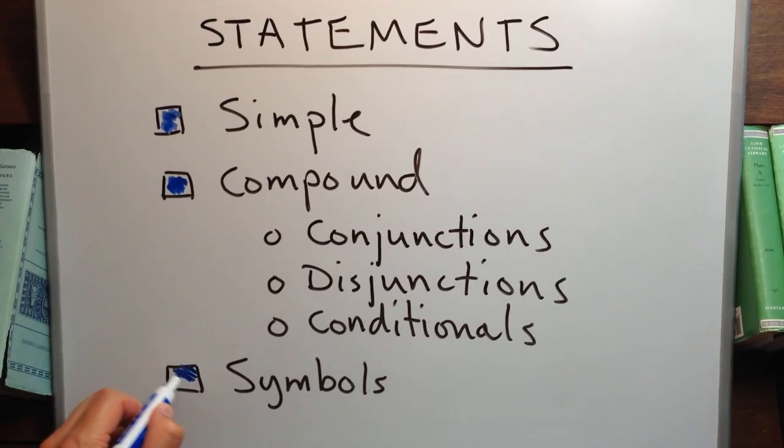That concludes our discussion of symbols. Now a question. What are several ways of expressing a conditional in English?